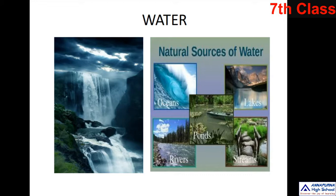How did the planet earth get its water? There are many reasons. The earth gets water from rain and fog through precipitation. We get water from rain, waterfalls, and oceans. That water is stored in oceans, rivers, ponds, lakes and streams.